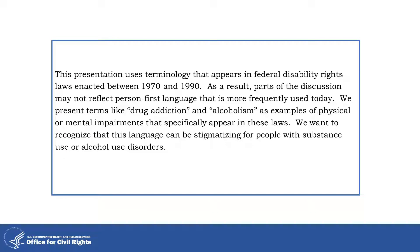This presentation uses terminology that appears in federal disability rights laws enacted between 1970 and 1990. As a result, parts of this discussion may not reflect person-first language that is more frequently used today. We present terms like drug addiction and alcoholism as examples of physical or mental impairments that specifically appear in these laws. We want to recognize that this language can be stigmatizing for people with substance use or alcohol use disorders.